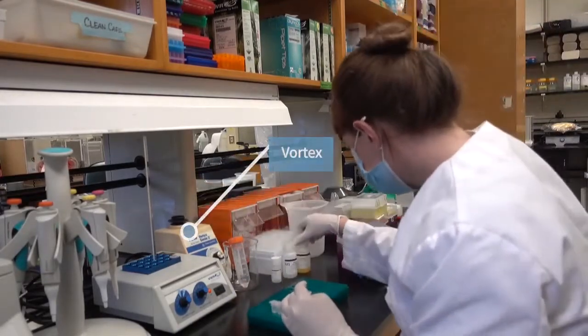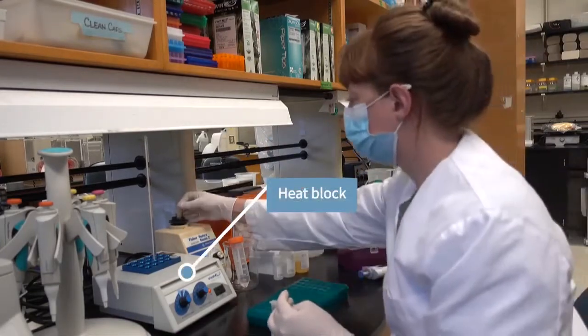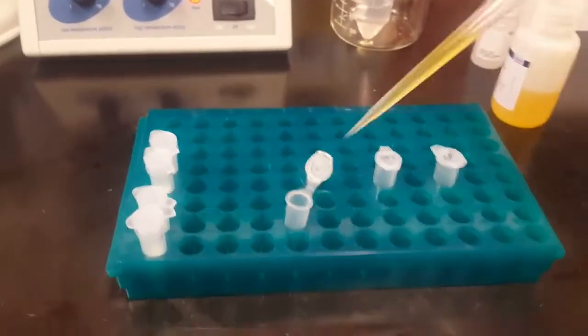And now you can see me mixing my sample together using a machine called a vortex, and then I'm going to be incubating it at a specific temperature on a heat block. And here is just a close-up view of that process.